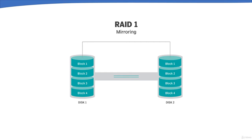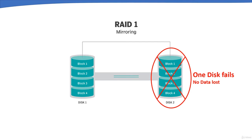RAID 1 — the Mirroring Method — stores data twice by writing it to both the data drive and a mirror drive. If a drive fails, the controller uses either drive for data recovery. You need at least two drives for RAID 1. It offers excellent read speed and write speed comparable to a single drive. In case of failure, data just needs to be copied to the replacement drive. The main disadvantage is that effective storage capacity is only half of the total, since all data is written twice.